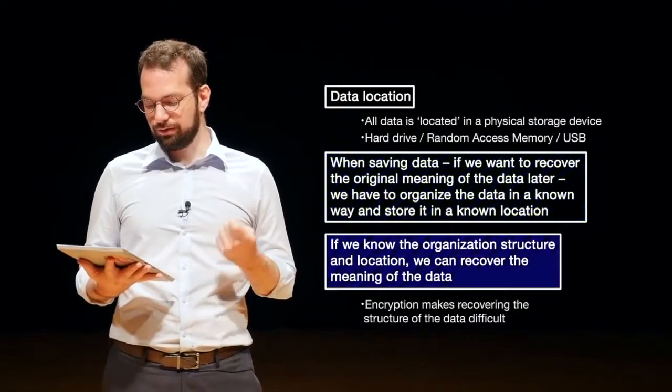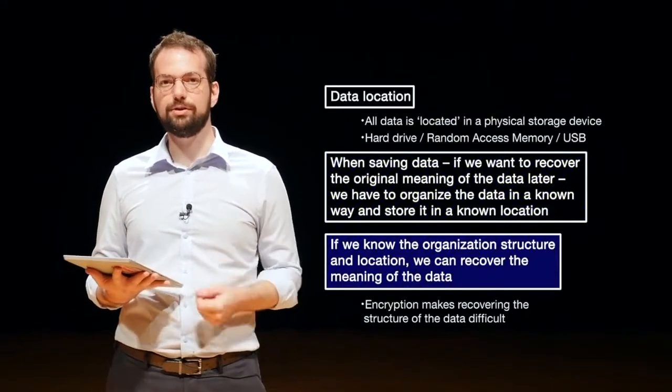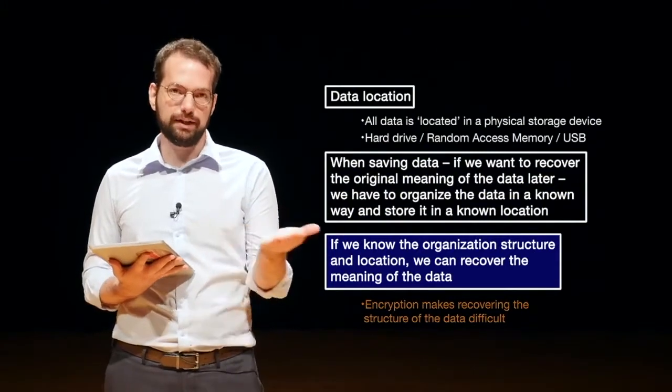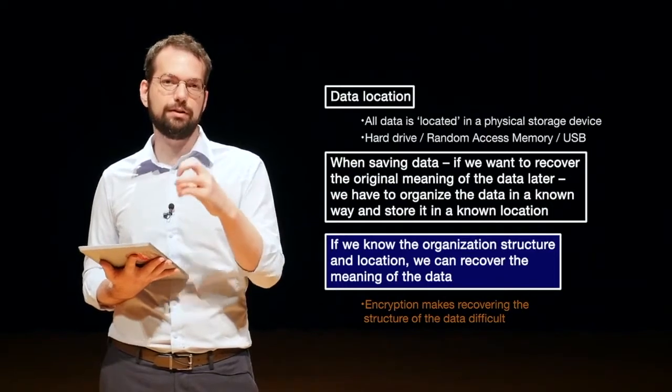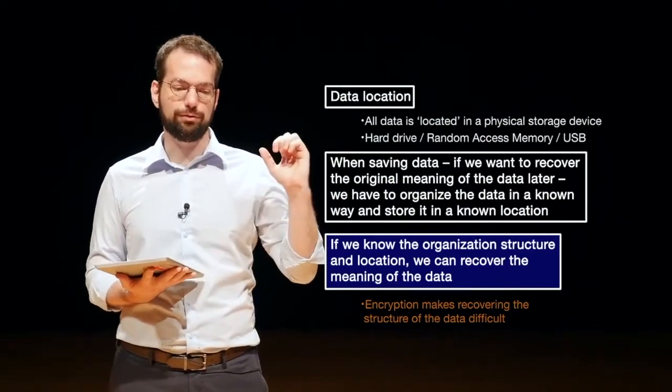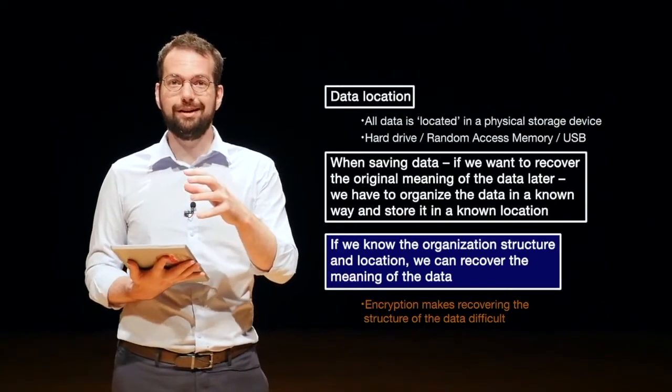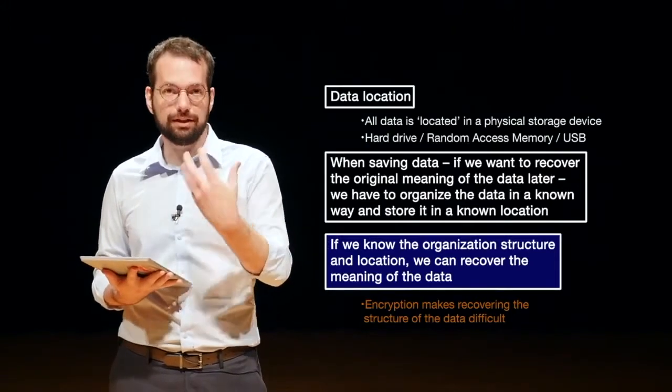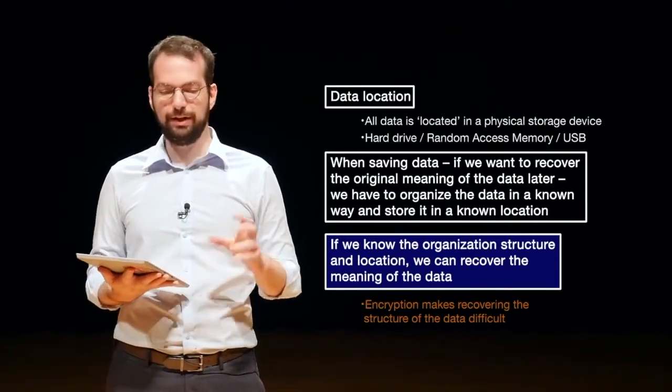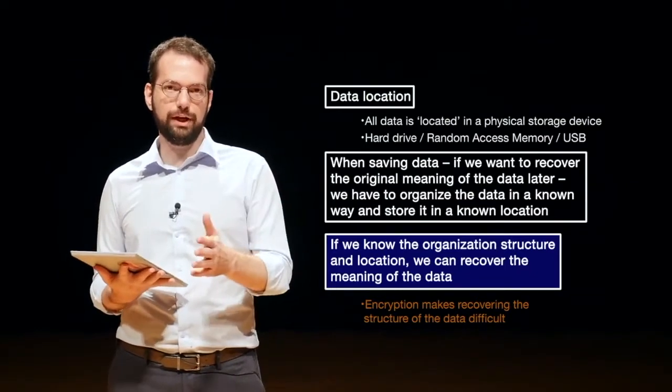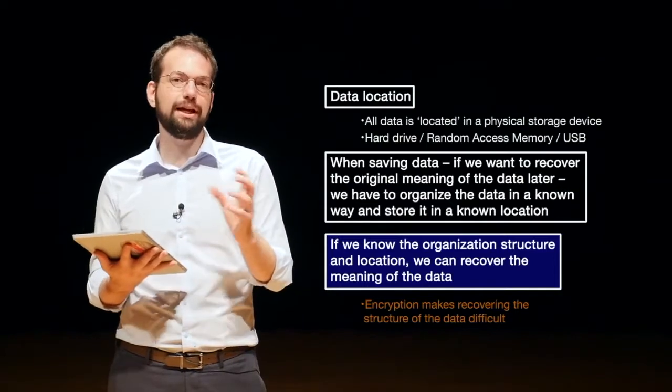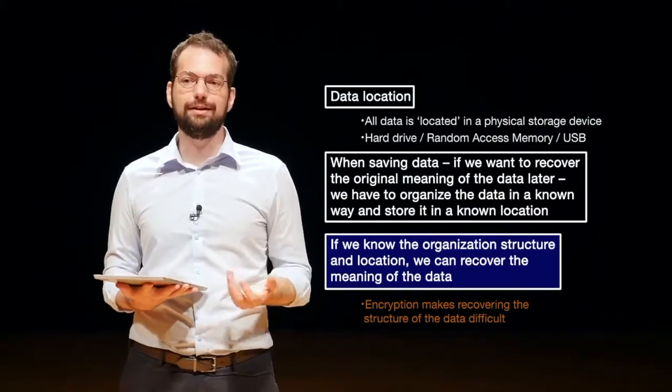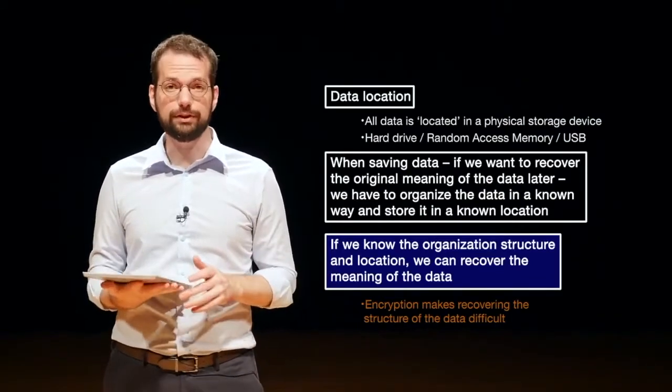If we know the organization's structure and location, we can recover the original meaning of the data, and that's what investigators are trying to do. Remember, we're trying to go from this binary level, these ones and zeros, to information that's relevant to our case. So, we have to go from data to information, and we need to make sure that we're preserving the actual meaning of that data, or we're actually getting the real meaning of the data. And of course, encryption makes this difficult because even if we know the location, it changes the organization of the data, so we can't actually get any meaning out of it. Encryption is a big part of our considerations during digital forensic investigations.